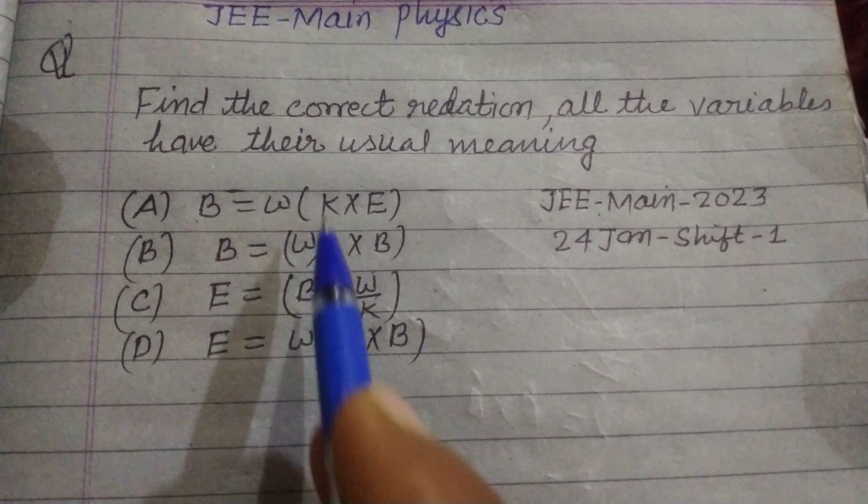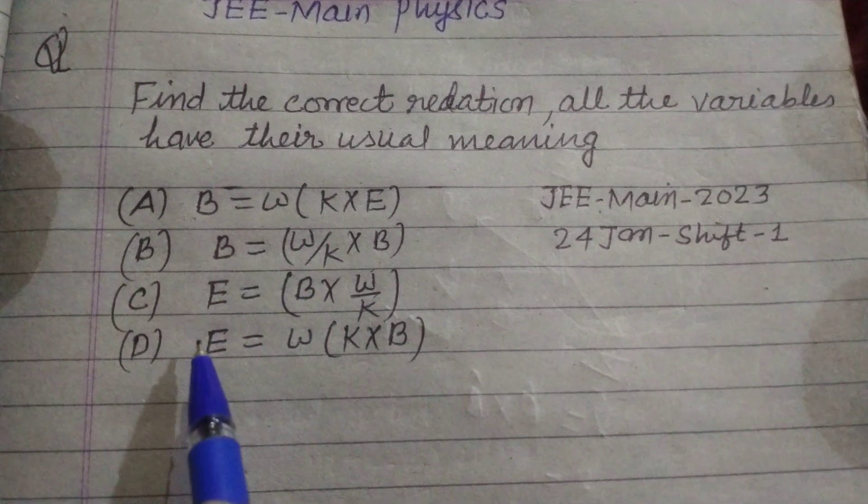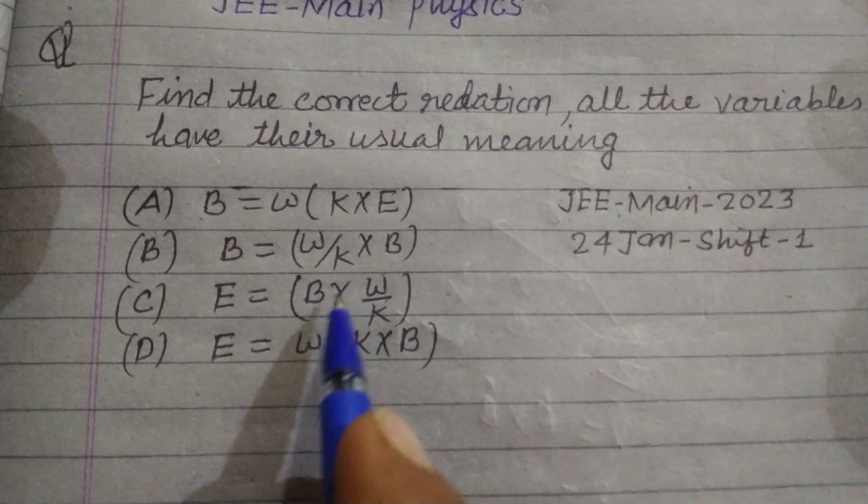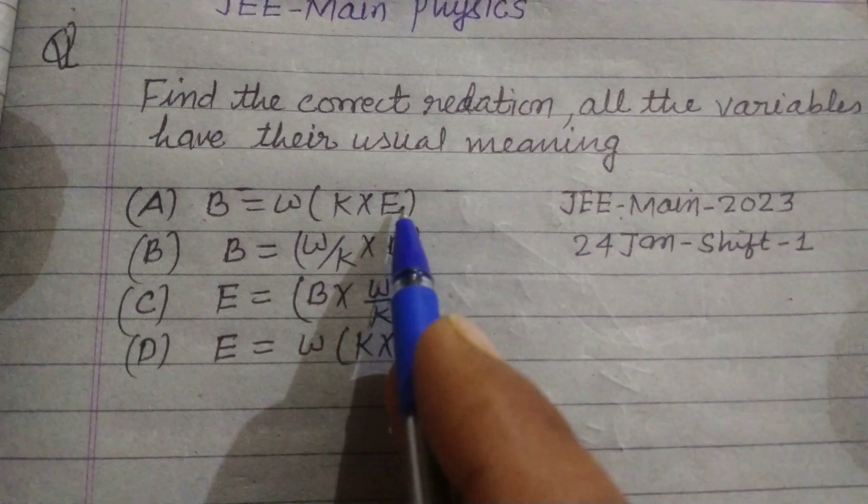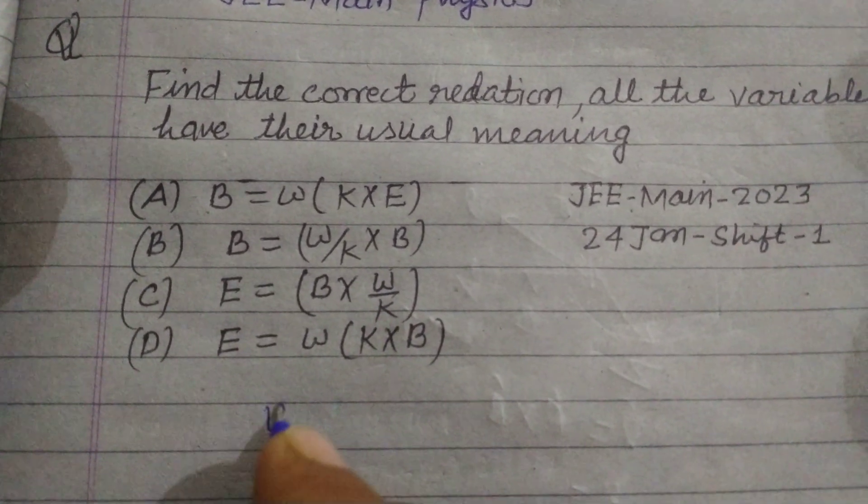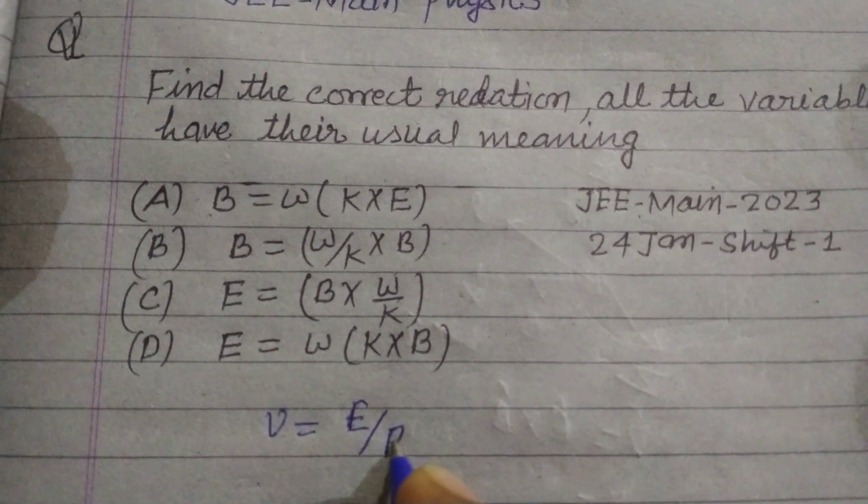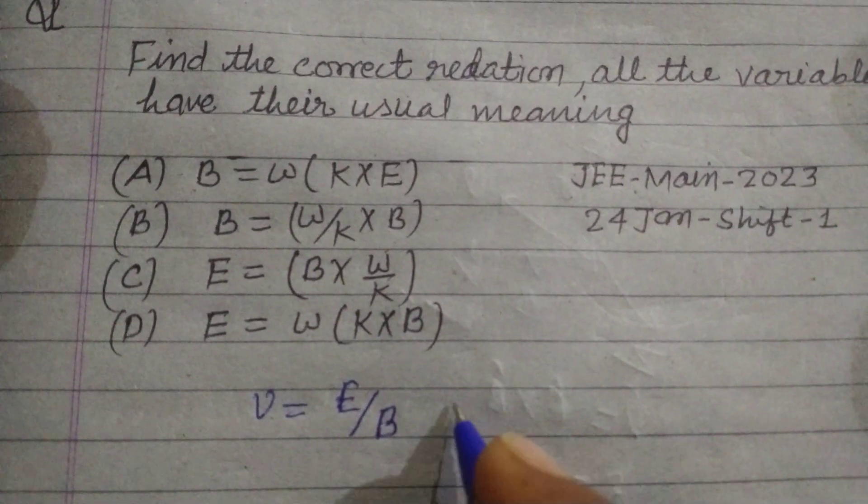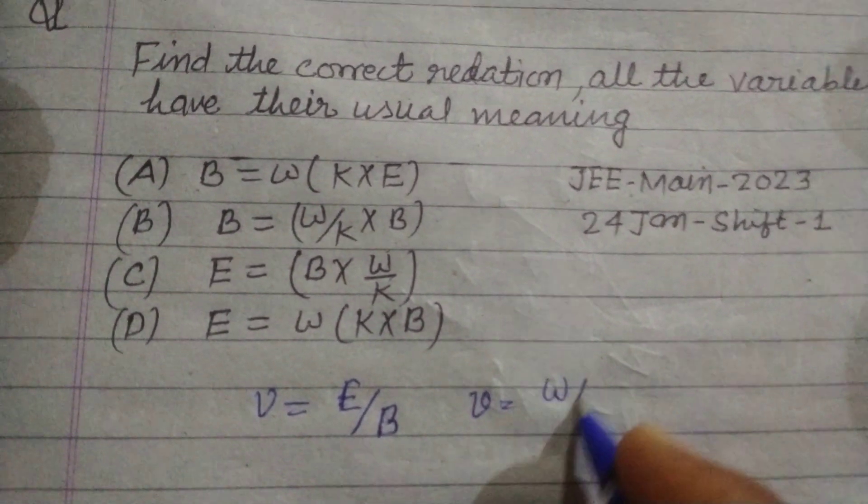So here B is magnetic field and Omega is the angular velocity and E is the electric field. And you know that V equal to E over B. And V is also equal to W upon K.